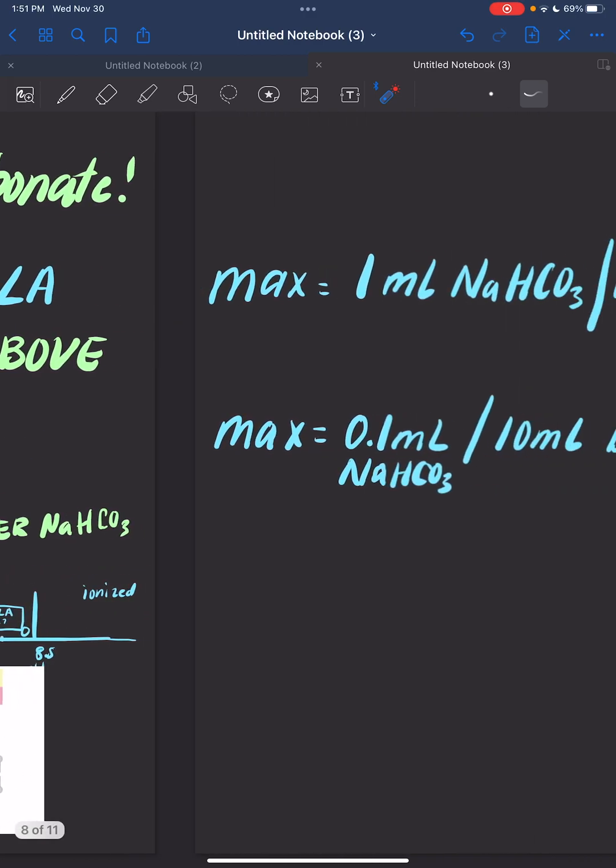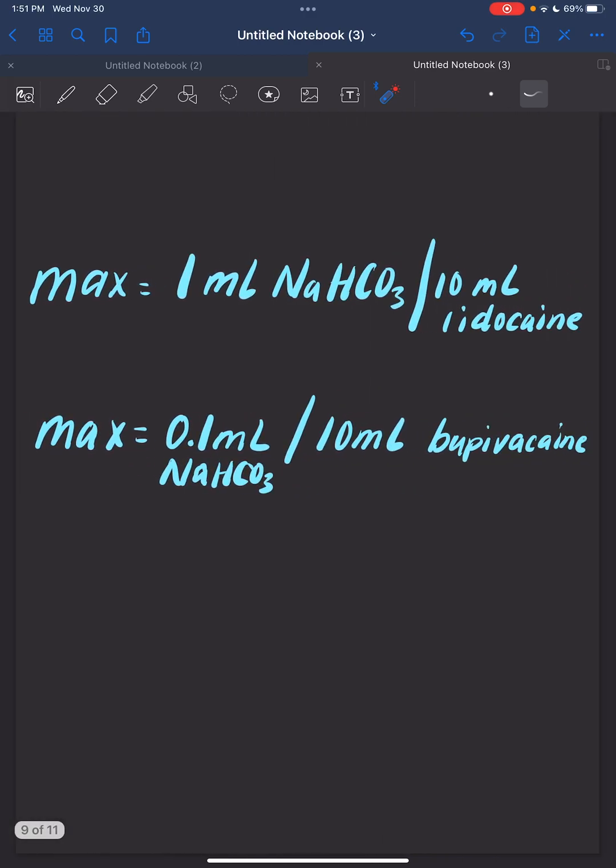How much bicarb can we give to certain local anesthetics? The max bicarb we can put into lidocaine is 1 mL of bicarb per 10 mL of lidocaine. So if we have 20 mL of lidocaine, we can put 2 mL of sodium bicarb.